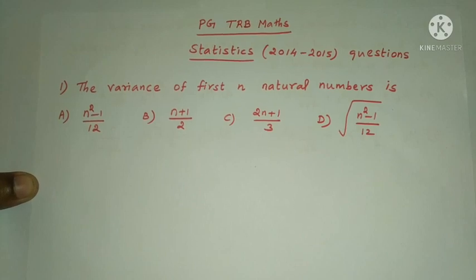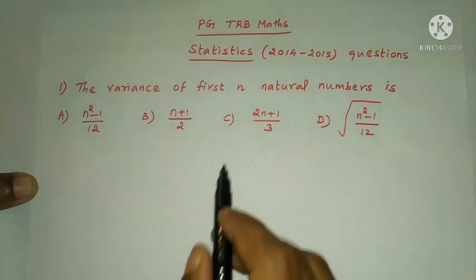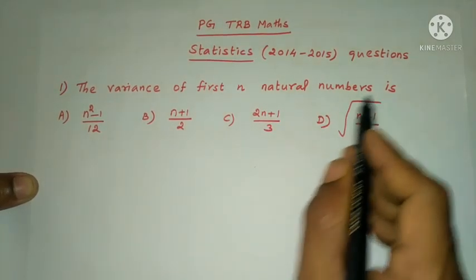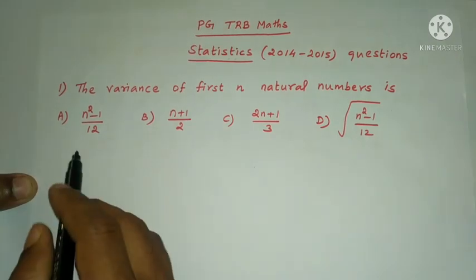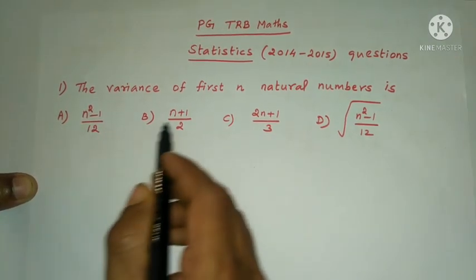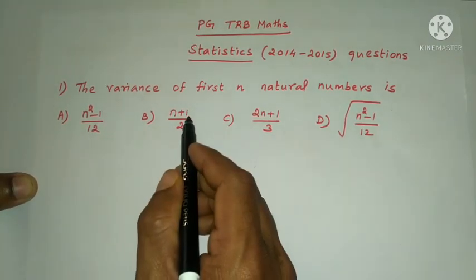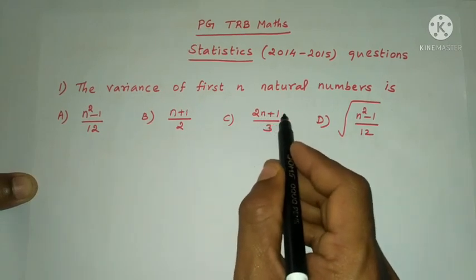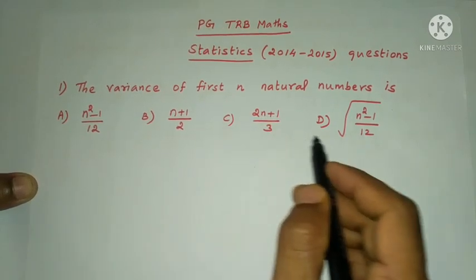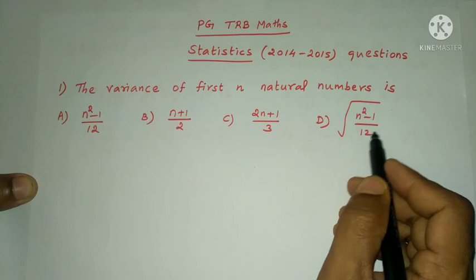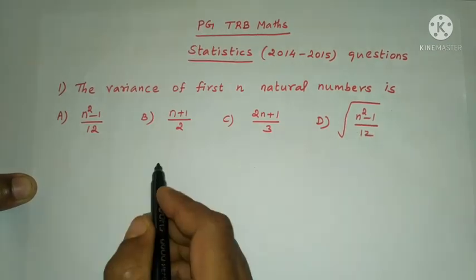First question: the variance of first n natural numbers is — option: n squared minus 1 by 12, n plus 1 by 2, 2n plus 1 by 3, or root of n squared minus 1 by 12.